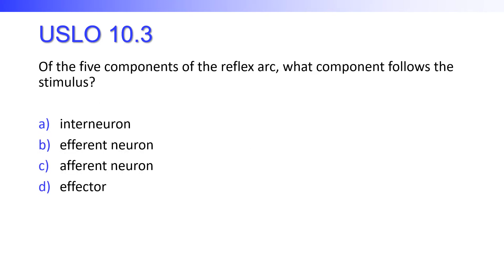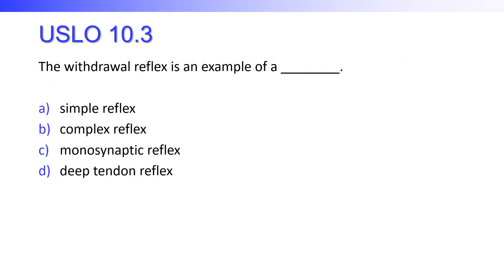Of the five components of the reflex arc, what component follows the stimulus? Is it the interneuron, the efferent neuron, the afferent neuron, or the effector? What follows the stimulus is the afferent neuron. The withdrawal reflex is an example of a simple reflex, a complex reflex, a monosynaptic reflex, or a deep tendon reflex? It is an example of a complex reflex. The simple reflex is the same as a monosynaptic reflex, and a deep tendon reflex is also a simple reflex — so the only one that isn't is the complex reflex. That's a little test-taking strategy.